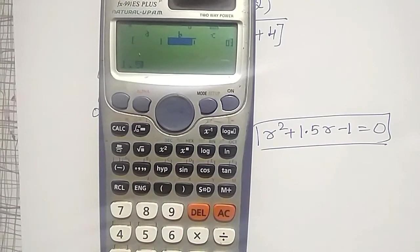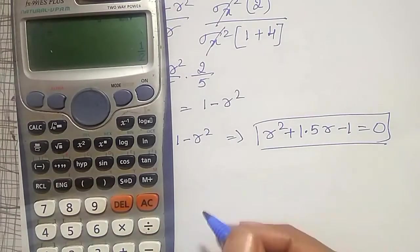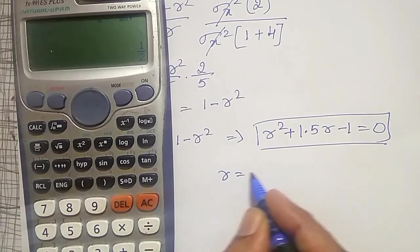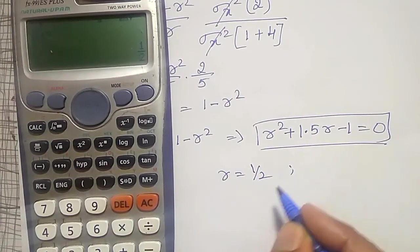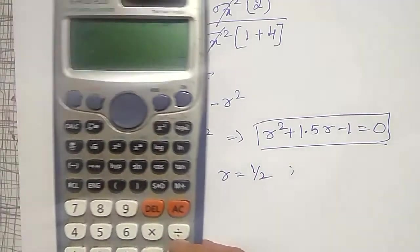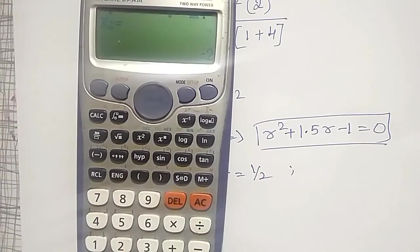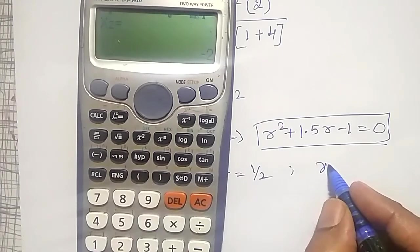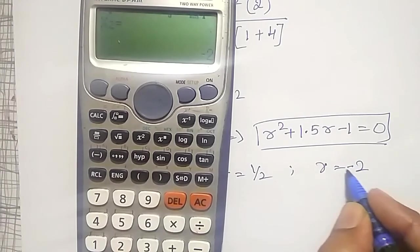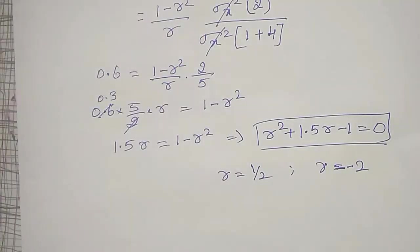That is 1, 1.5, minus 1. The solution x1 is 0.5, therefore r equals 1 by 2. And one more solution, x2 equals minus 2, that is r equals minus 2.